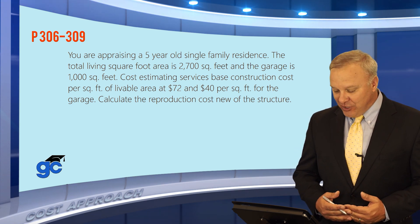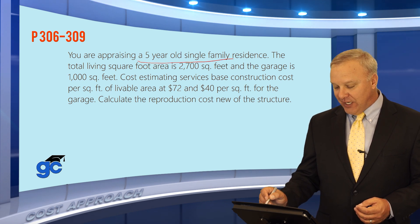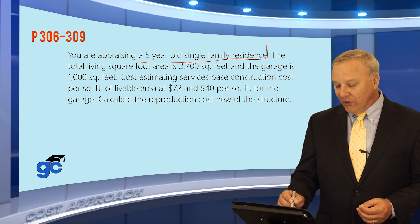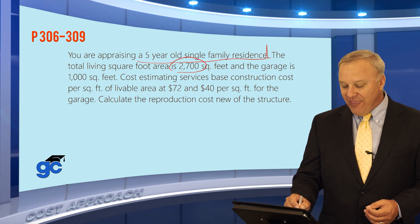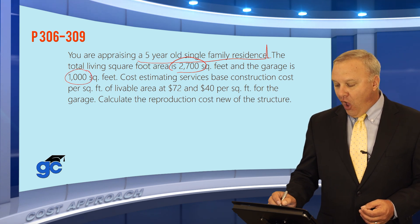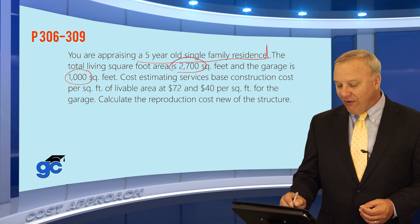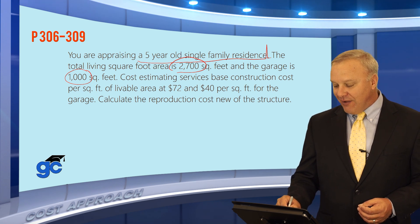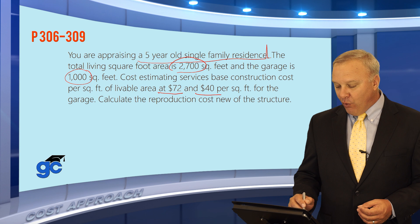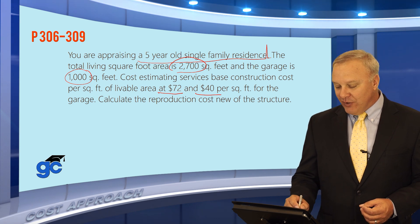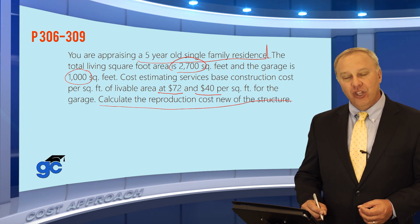Let's take a look at a question. It says you are appraising a five-year-old single-family residence. The total living square footage is 2,700 square feet and the garage is 1,000 square feet. Cost estimating services base construction costs per square foot of livable area at $72 per foot and $40 for the garage. The question asks you to calculate the reproduction cost of the structure.